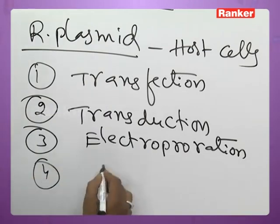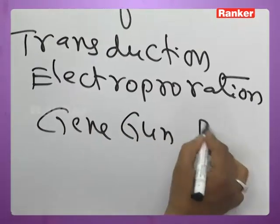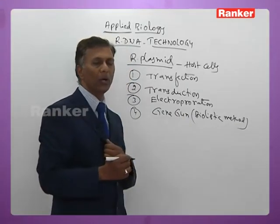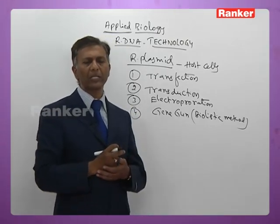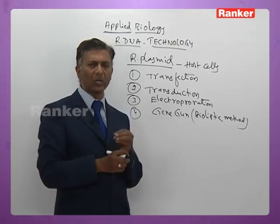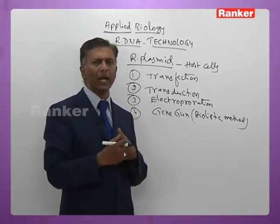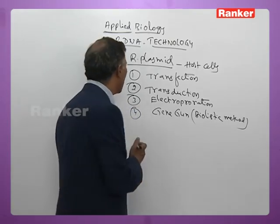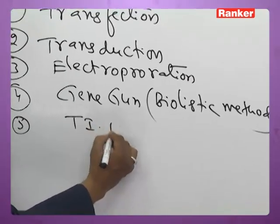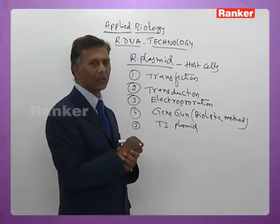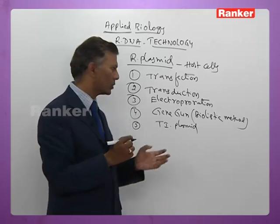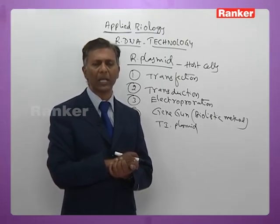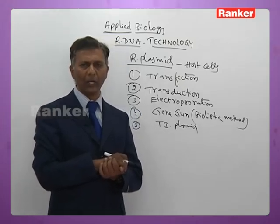Another method is the gene gun method, also called the biolistic method. A gene gun is equipment coated with a gold plate, used to introduce plasmids into host cells. The recombinant plasmids are made to stick to the gold-plated coating, and then the instrument is bombarded with the host cells so that the plasmids forcibly enter into the host cells. In plants, Ti plasmids (tumor-inducing plasmids) are mostly used to introduce rDNA into plant tissues.